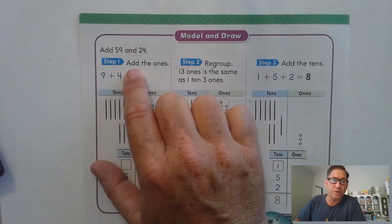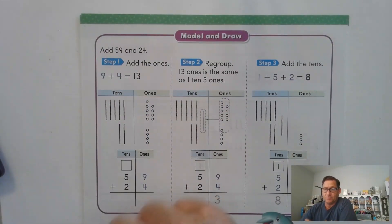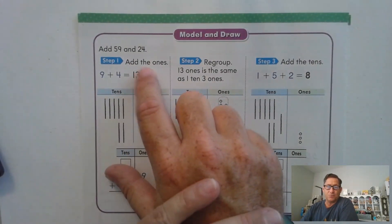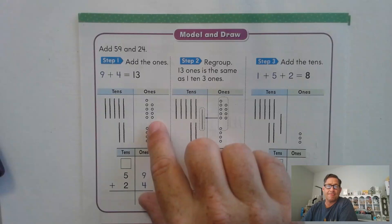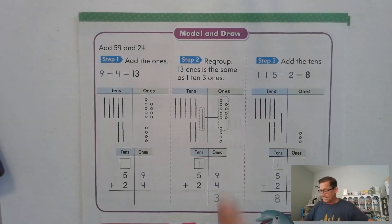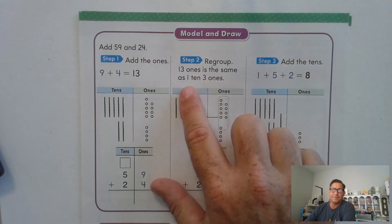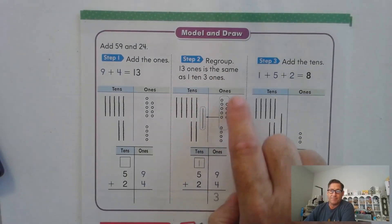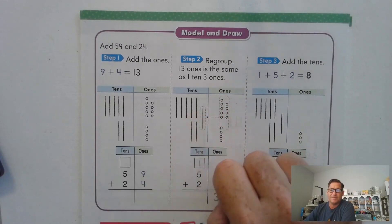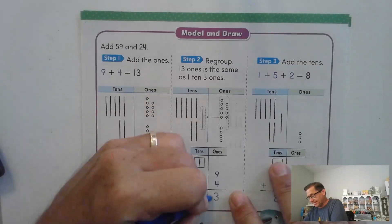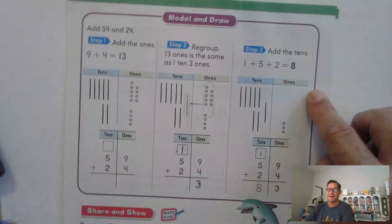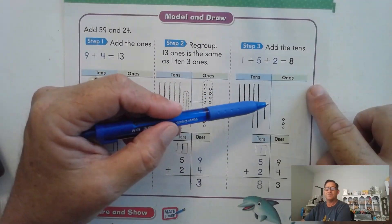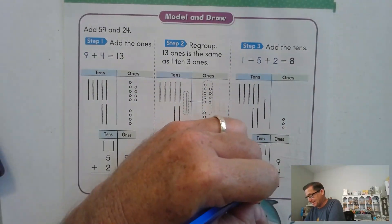Let's turn to page 194. We're going to add 59 and 24. This isn't any different really than our last lesson — just ongoing practice. Step one, we're going to add the ones: 9 and 4. 9 plus 4 is 13. Step two, we're going to regroup. 13 ones is the same as 1 ten and 3 ones. We've been showing that by circling 10 ones and trading them for a 10, and then writing what is left. So 13 is written as 1 ten and 3 ones. Then our final step, we added the 10s: 5 tens plus 2 tens plus the regrouped 10 gives us 8 tens.